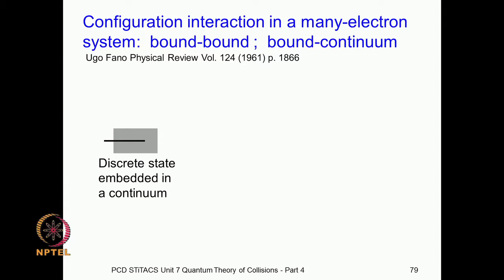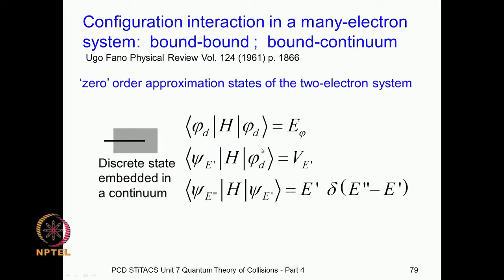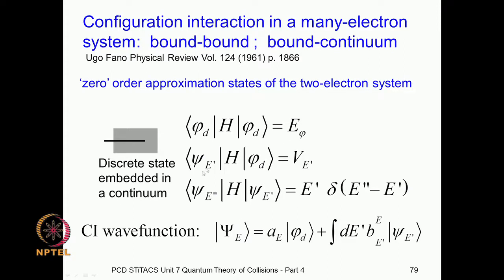We have a situation in which a bound-to-bound discrete state is embedded in the continuum. We constructed the energy matrix in our previous class, which has these elements, and then we set up the configuration interaction, which has both the discrete as well as the continuum components. This CI is a result of the correlation which is ignored in the independent particle approximation.